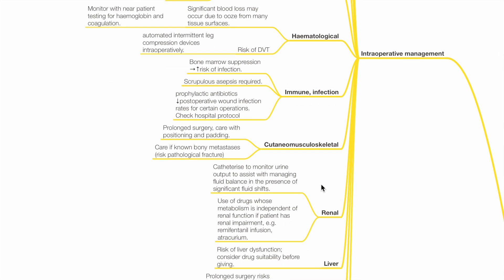Immune and infection. Marrow suppression leads to increased risk of infection. Scrupulous asepsis is required. Prophylactic antibiotics reduce post-op wound infection rates for certain operations. Check hospital protocol.